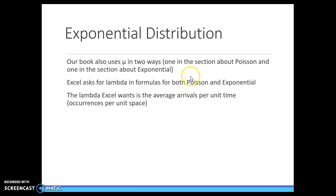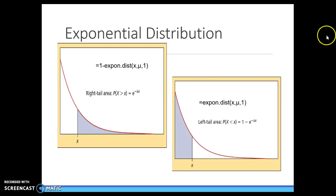Just FYI, some books use mu, some books use lambda. But they're essentially talking about lambda represents the mean of what's expected. In Excel,